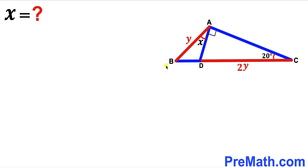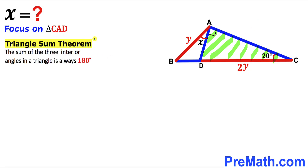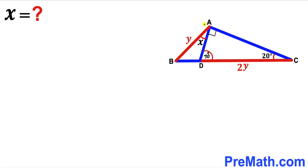Let's get started. For our first step, let's focus on right triangle CAD and recall the angle sum theorem. According to this theorem, the sum of the three interior angles in a triangle is always 180 degrees. In triangle CAD, one angle is 20 degrees and another is 90 degrees, so therefore the third angle has to be 70 degrees.